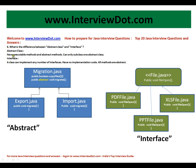Abstract class: abstract classes have executable methods and abstract methods. A class can only subclass one abstract class. Interface: a class can implement any number of interfaces. Interfaces have no implementation code — all methods are abstract.